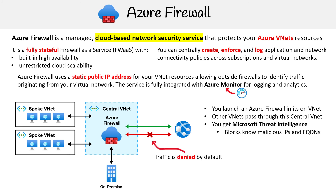By default, the traffic is set to deny. But you can set connectivity policies to filter out traffic in a variety of ways to make sure that you are protected.